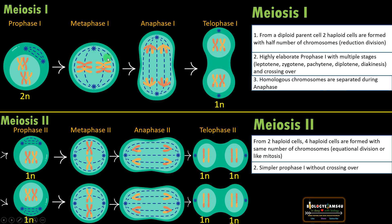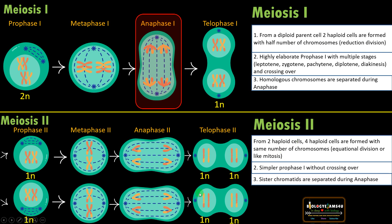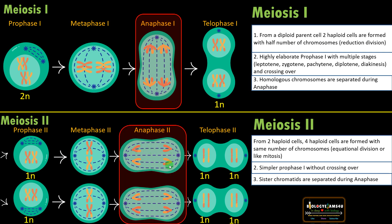Difference number three. In meiosis I, homologous chromosomes are separated, as you see here — these homologous chromosomes are separated during anaphase I of meiosis I. Whereas in meiosis II, as you see here, sister chromatids are separated, as in mitosis.